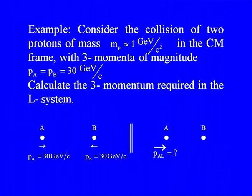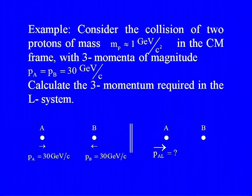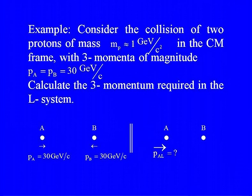Let us do a numerical example. Consider the collision of two protons, each with rest mass approximately 1 GeV/c². We consider the collision in the centre-of-mass system with 3-momenta of magnitude 30 GeV/c. Two protons A and B come towards each other with momenta 30 GeV/c each. The question is: what momentum in the lab system is necessary to produce this much momentum in the centre-of-mass system?